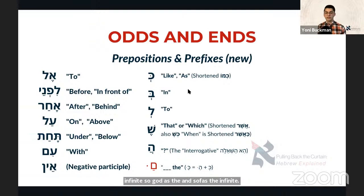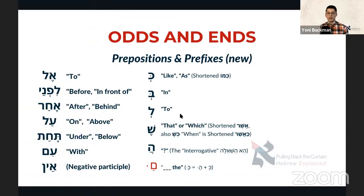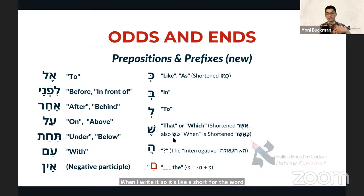On the right-hand side, we have new prefixes. 'Ki' means 'like' or 'as' — probably a shortened version of 'kimo.' 'Bi' with a bet means 'in.' 'Li' means 'to,' also probably a shortening of 'l.' 'She' is probably short for the word 'asher,' meaning 'that' or 'which.' You can also double them up — 'ki' and 'she' together give you something like 'ka-asher,' meaning 'when.' These are common prefixes both biblically and in modern Hebrew.